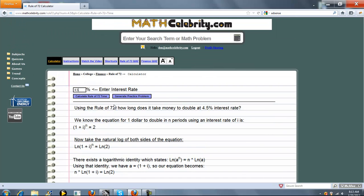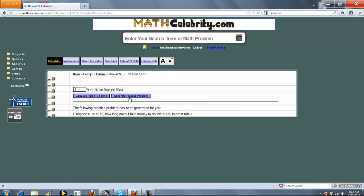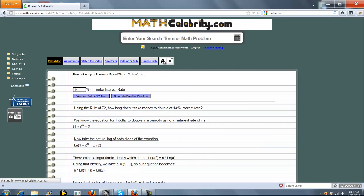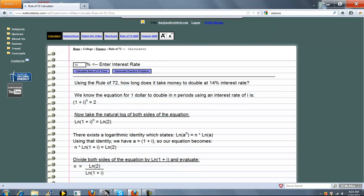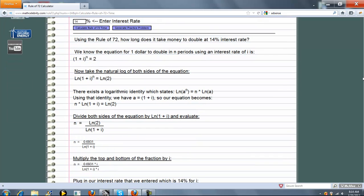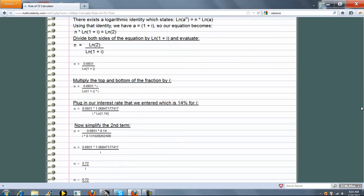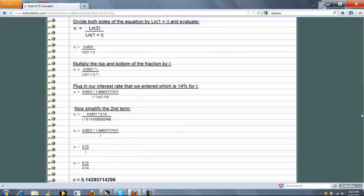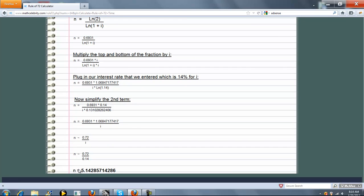One other feature we have is a Generate Practice Problem button. You press this once and it generates a random interest rate for you. We've already ran 8, so let's press it again. This time we get 14. When you're ready, you press 'Calculate Rule of 72 time,' and it runs that interest rate through the Rule of 72 equation. And there's your answer.